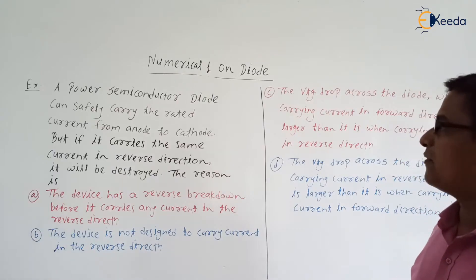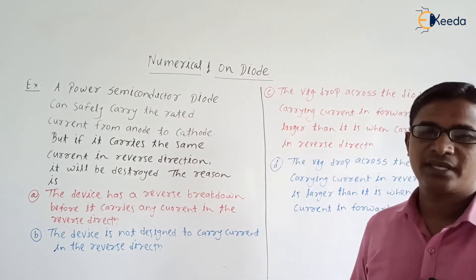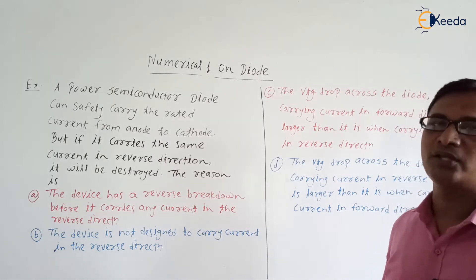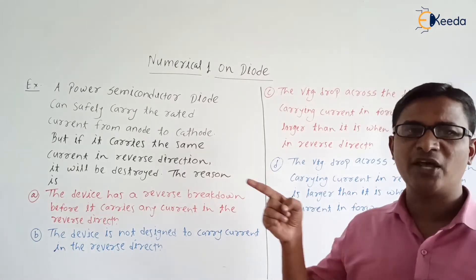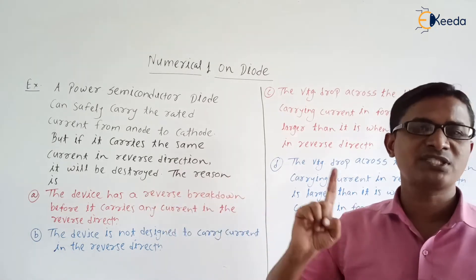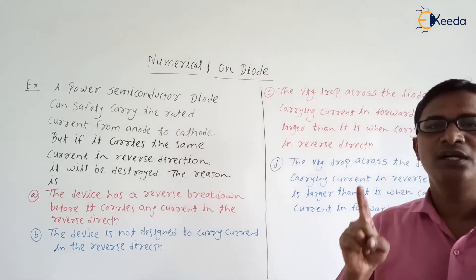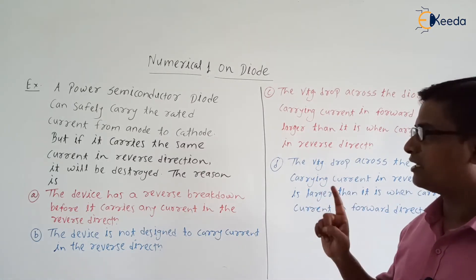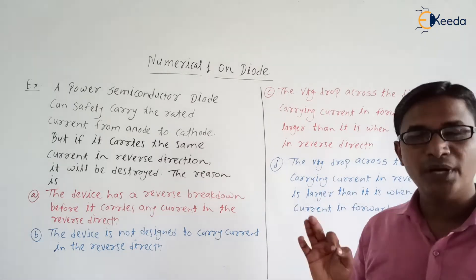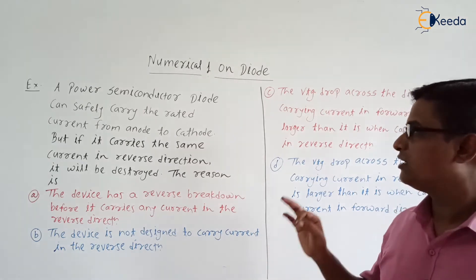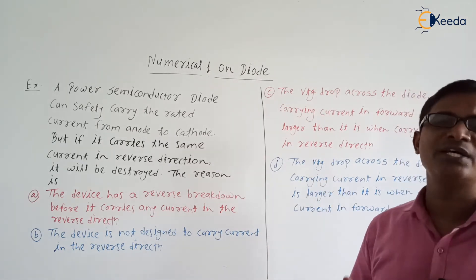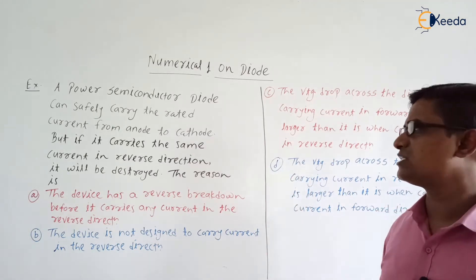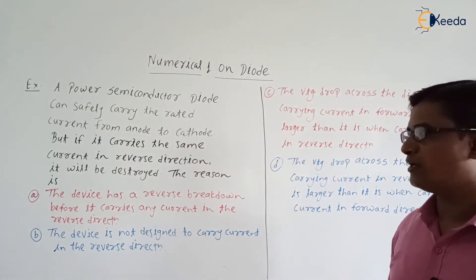A power semiconductor diode can safely carry the rated current from anode to cathode. Current flowing from anode to cathode means the diode is in forward bias mode. But if it carries the same rated current in the reverse direction, it will be destroyed.